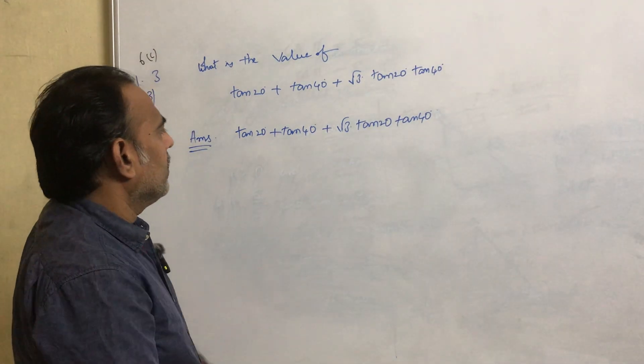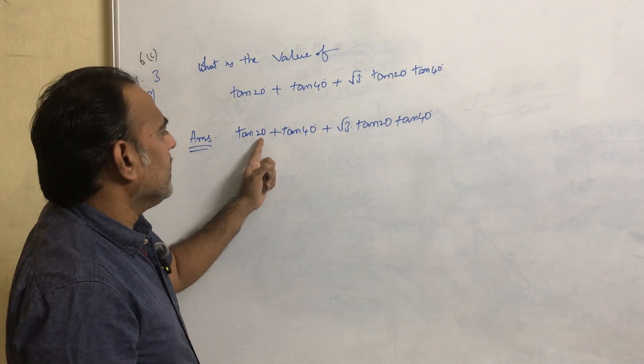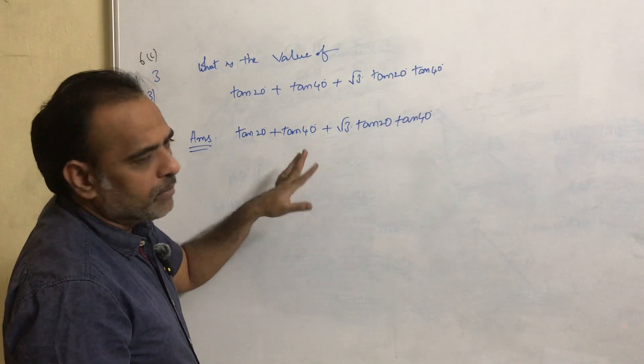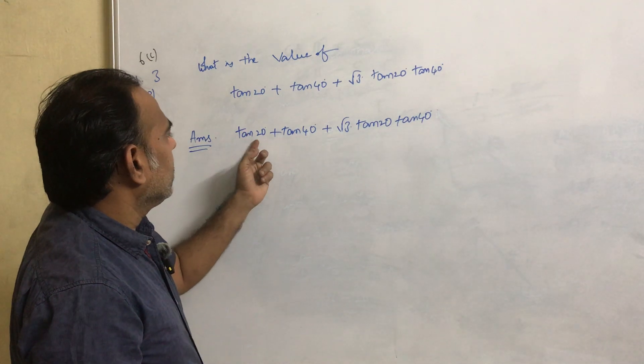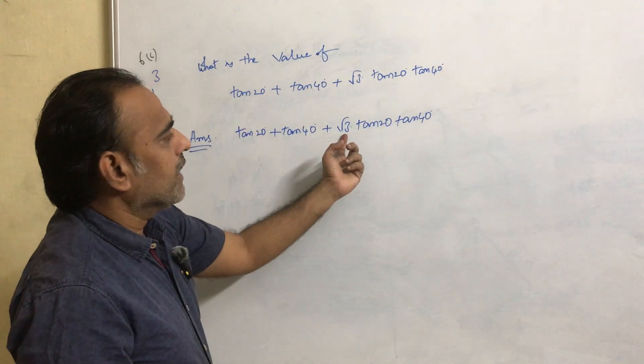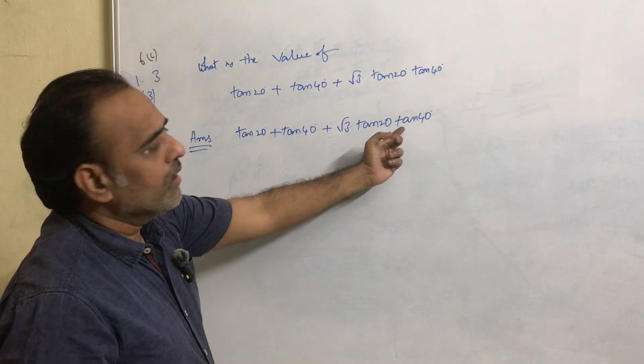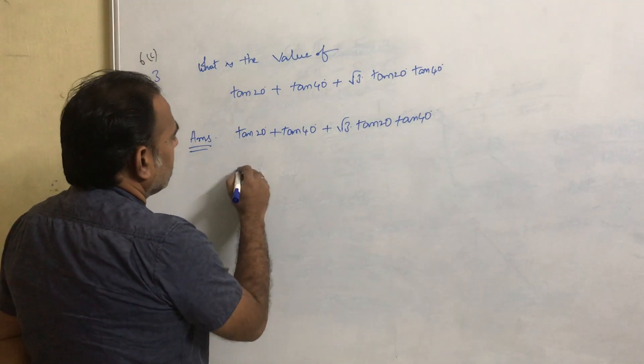If we look at this problem statement, consider tan 20° as A and tan 40° as B. Suppose tan A is there, plus tan B is there, plus root 3 something is there into tan A tan B. To find this, we might write like this.